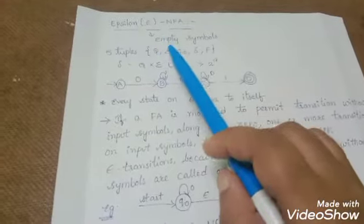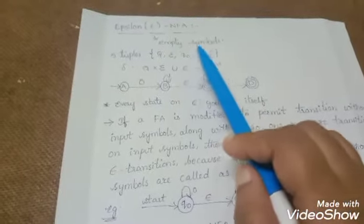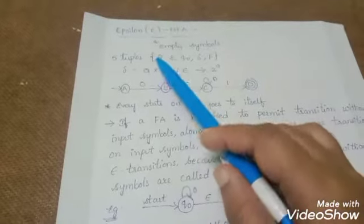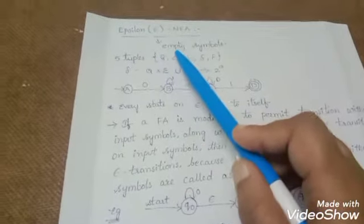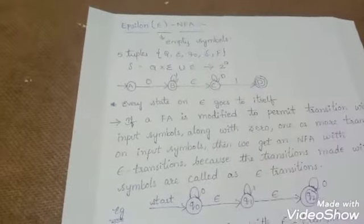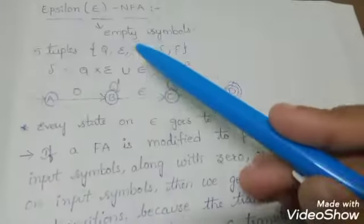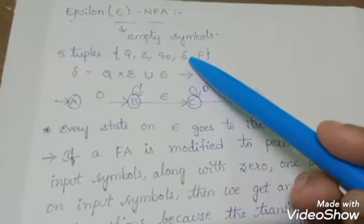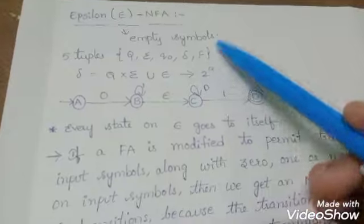Those are Q, sigma, Q naught, delta, and F. Q is the number of states, sigma is the number of inputs, Q naught is the start state, delta is the transition function, and F is the final state.